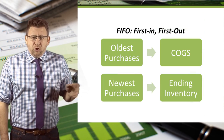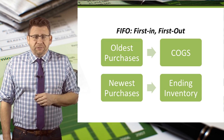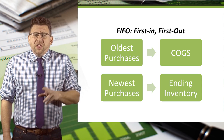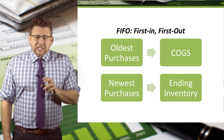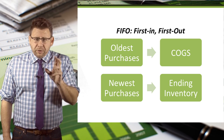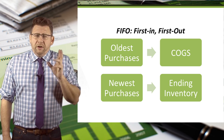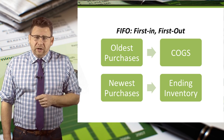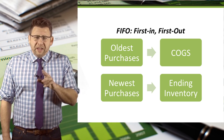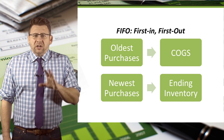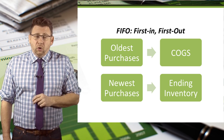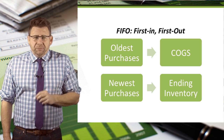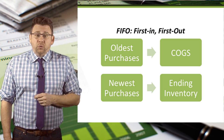Under FIFO, which stands for First In, First Out, the cost of goods sold is based on the oldest purchases — so the first in is the first out of the warehouse. Under the FIFO method, companies are assumed to sell their oldest inventory first. Therefore, their ending inventory comes from their most recent purchases.